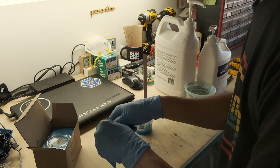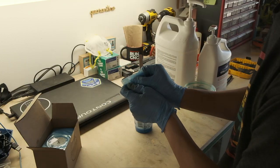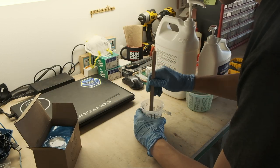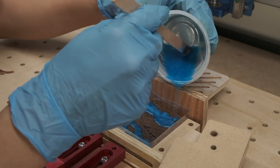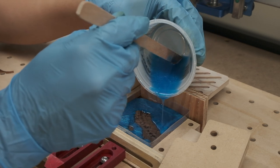Then I mixed up some Total Boat thick-set epoxy with a pair of blue pigment powders I thought would look good. This was then poured slowly over my slice of Hawaii, which had been lined with packing tape to contain the epoxy.